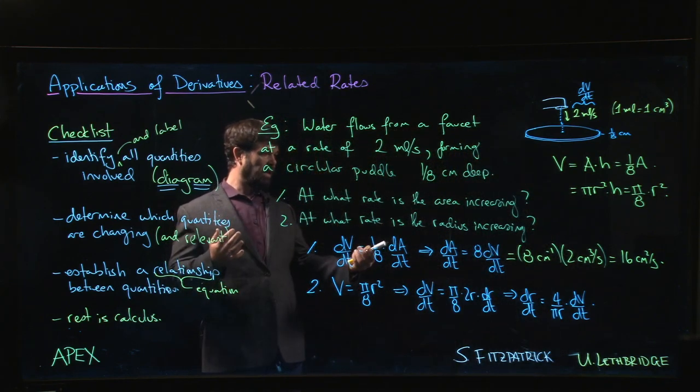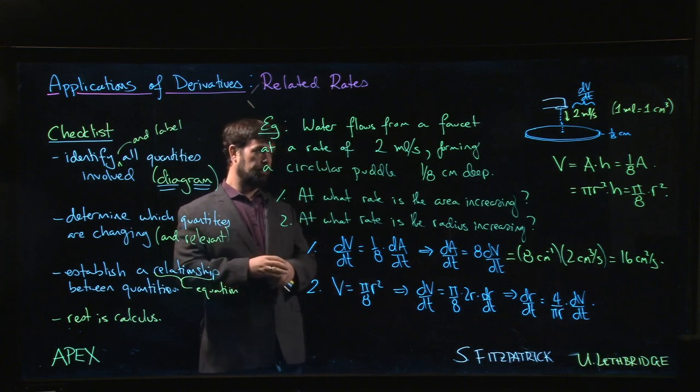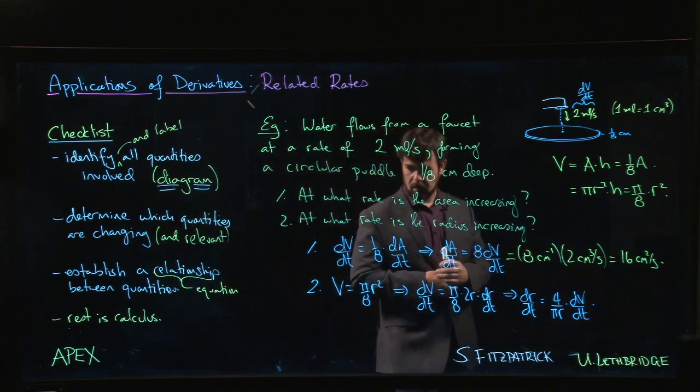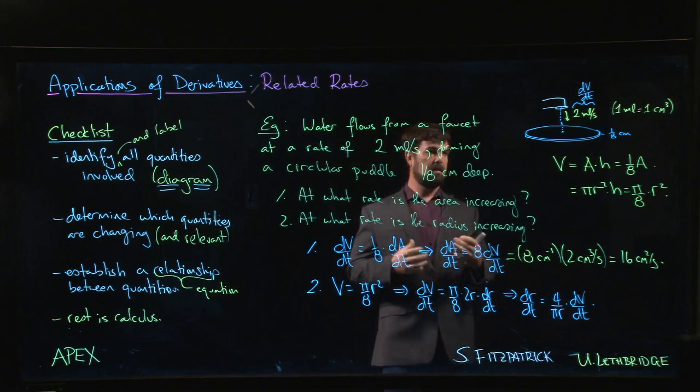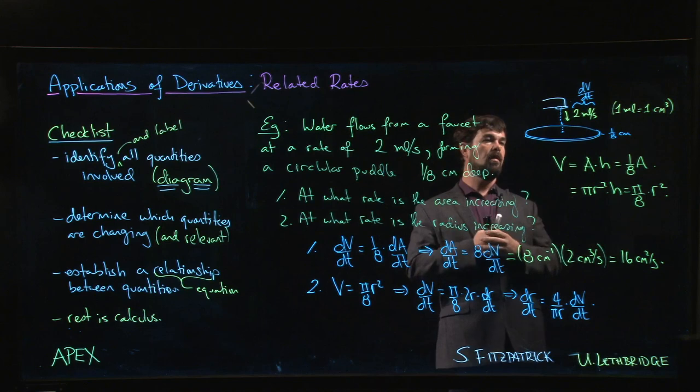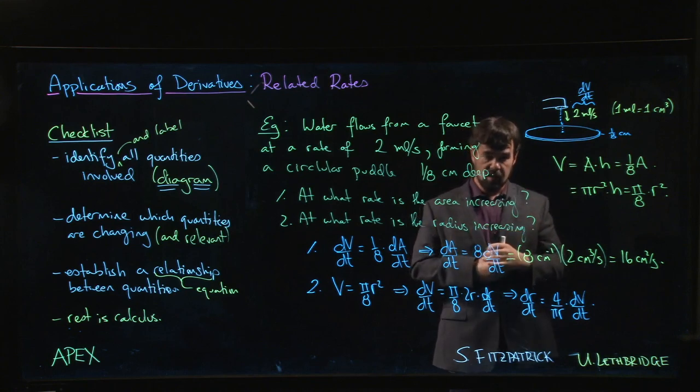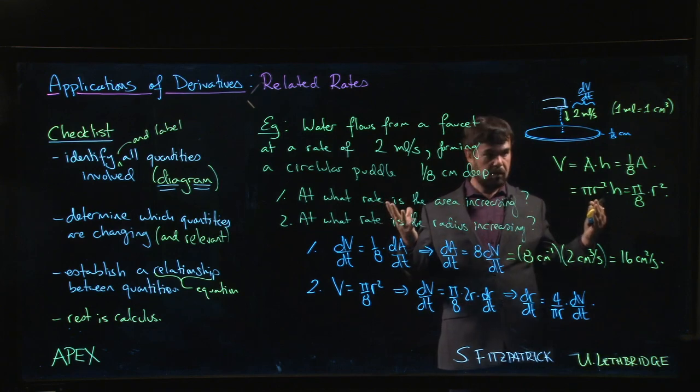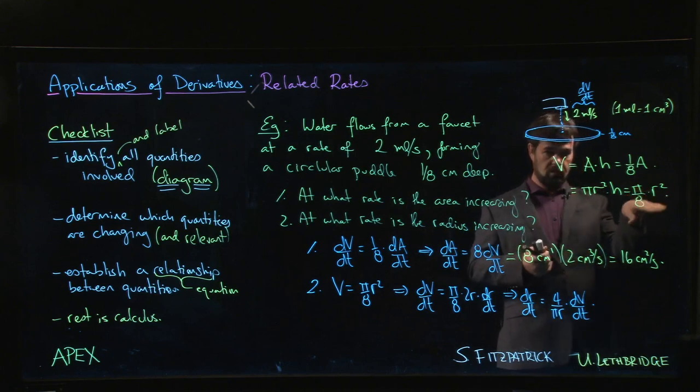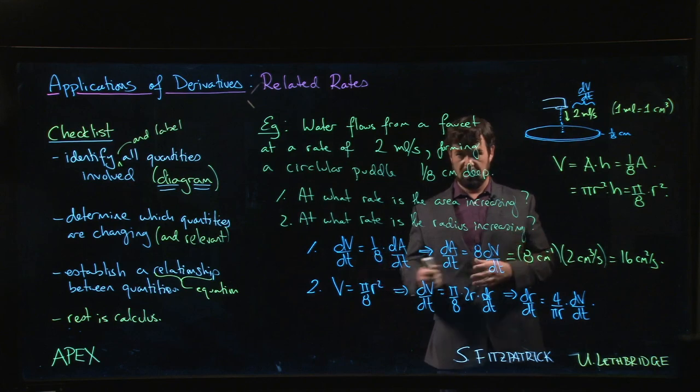The kind of question you might be asked here is something like: at what rate is the radius increasing when the radius is equal to 10 centimeters? Or you might even ask what rate is the radius increasing one minute after the puddle began to form. Then you have to think, if we start at time zero with zero volume, after a minute—which is 60 seconds—we've been adding water at two milliliters per second, so after a minute we have a total volume of 120 milliliters. We can put that in and say, if the volume is 120, what's the radius? There are lots of different ways you can change these up and make the problems slightly more or less challenging depending on the information given.